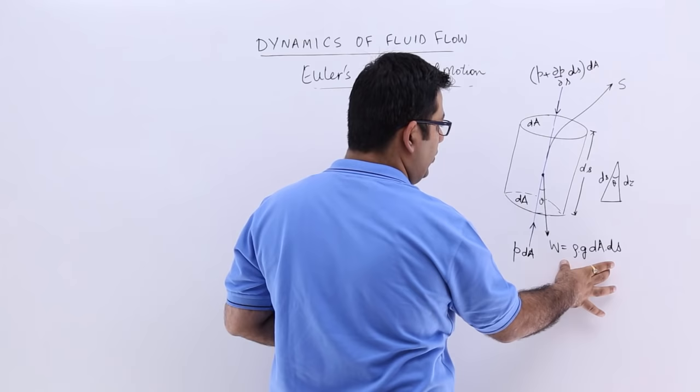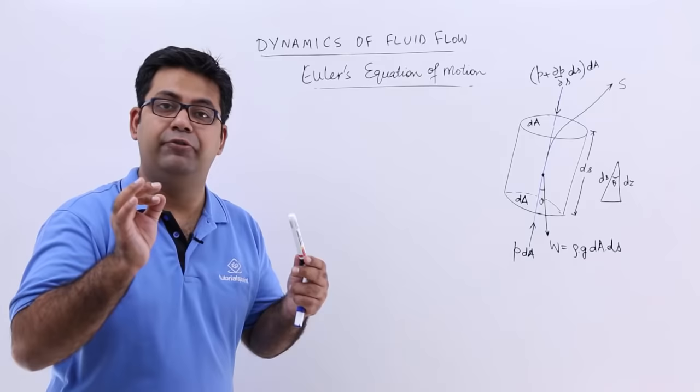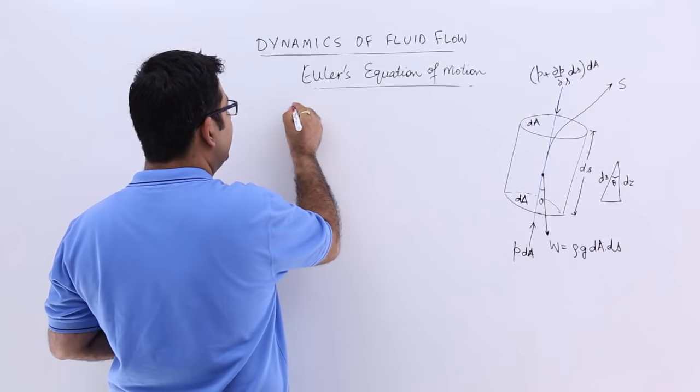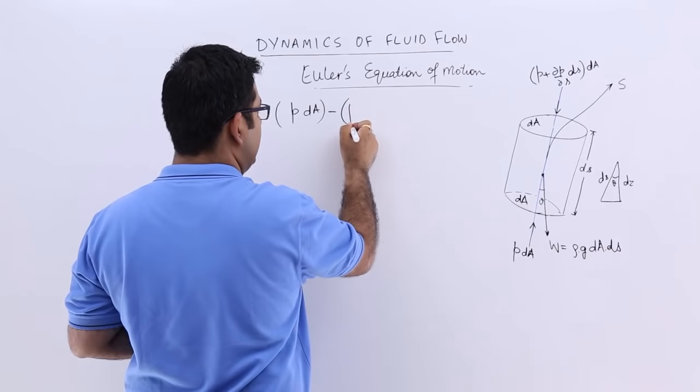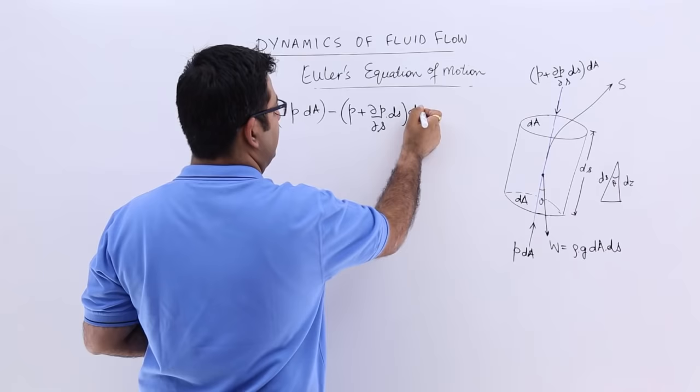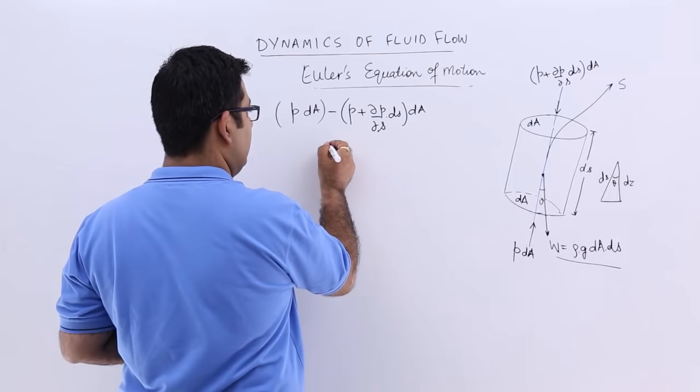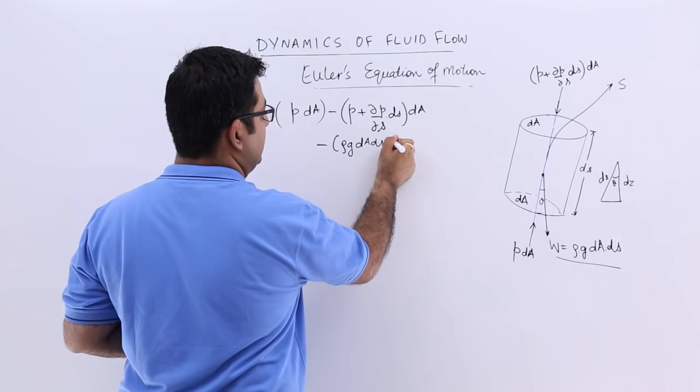You need to have a net force which will produce this motion. So you will have pdA, that's the force in the upward direction, minus that force, p plus curly p by curly s into ds dA, and the cos component of this along the direction of flow. So it will be minus rho g dA ds cos theta. So this is the net force.